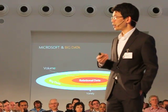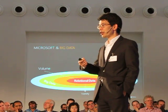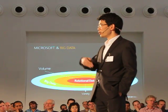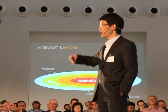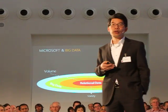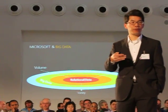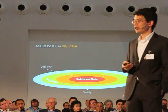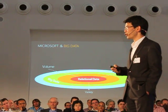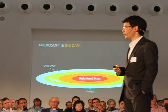But big data is also about a variety of data, going beyond structured data to unstructured data sets, web logs and so forth. And then big data is also about the velocity of data — streaming data, data that comes in a constant stream, growing data sets ever larger.